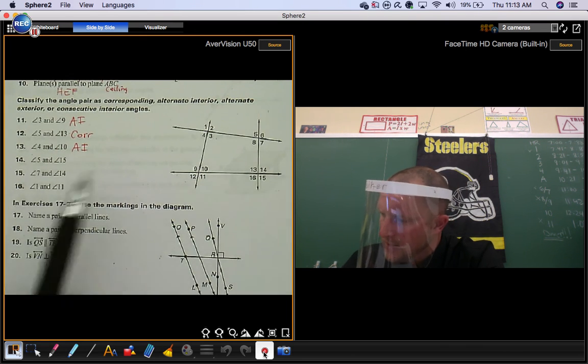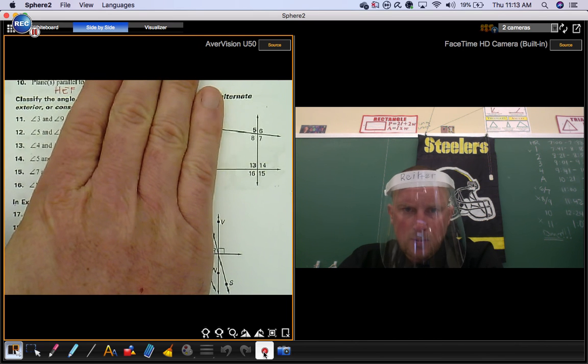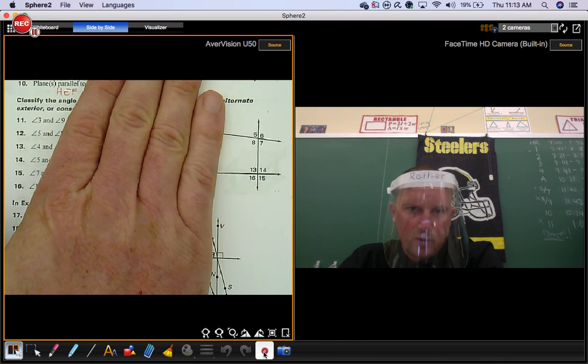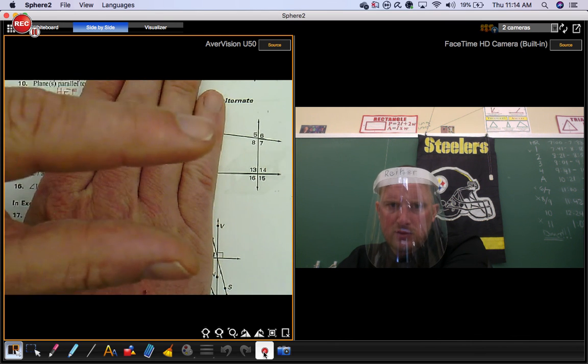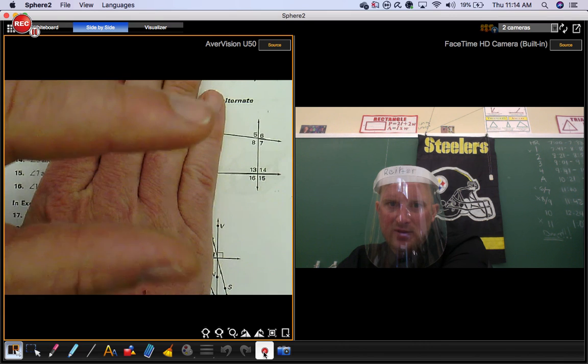Angle 5 and angle 15, that's an example of alternate exterior angles because they're not in between those lines. They're outside the lines.